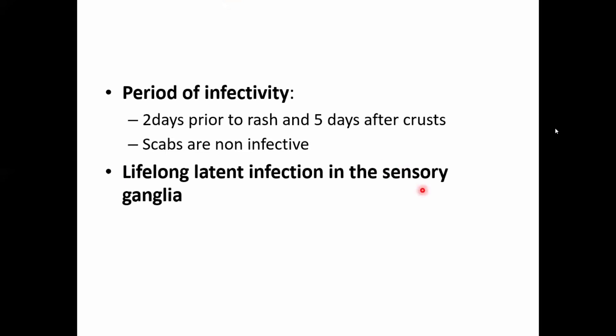The sensory ganglia are located along the spinal cord — cervical, thoracic, and lumbar — as well as in the cranial nerves. These are the dorsal root ganglia. The varicella-zoster virus stays in these sensory ganglia in latent form lifelong, and reactivation during immunocompromised states produces shingles, which follows the distribution of the affected dermatome.